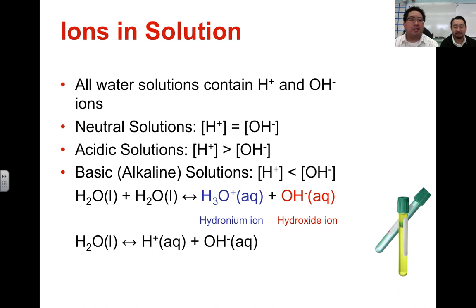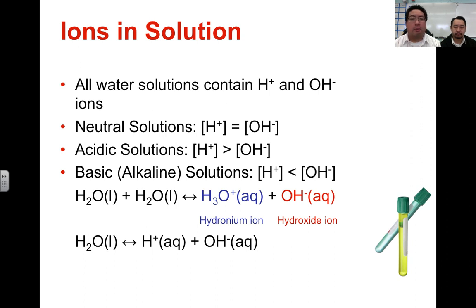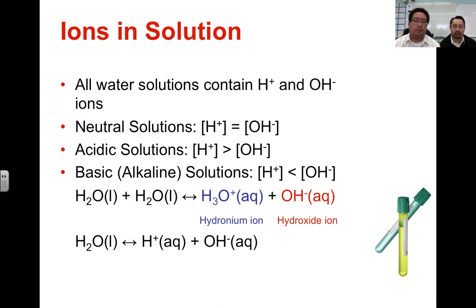Ions and solutions: all water basically contains a small amount of hydrogen and hydroxide ions. When determining whether something is an acid or a base, we look at the concentration of hydrogen and hydroxide ions in solution. If the solution is neutral, you're going to have an equal amount of hydrogen and hydroxide ions.